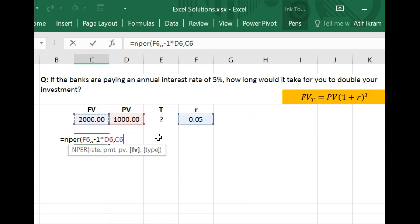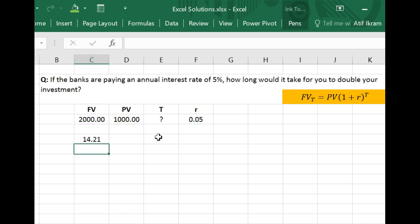You can ignore type for now. This we'll talk about in another video perhaps. And so now when you just do this, 14.21, and this is the number of years that it will take for 1,000 to become 2,000 or 100 to become 200 or 50 to become 100. This is how long it will take for you to double your investment.